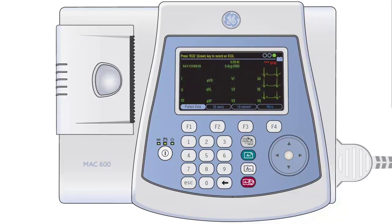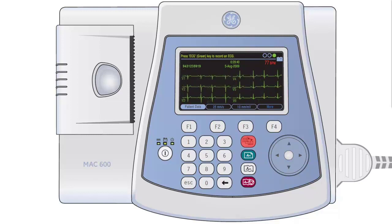The real-time ECG monitoring trace will now appear on the screen alongside the patient ID. On screen, all 12 lead views are clearly labelled and in the top right hand corner the patient's heart rate is displayed. Sensitivity and speed are set to the standard default setting and can be adjusted by using the F2 and F3 buttons if required. The Lead Display button provides you with the option to view a variety of different lead views. We would recommend that a 12 lead view is used to confirm a good quality trace is being received on all leads.